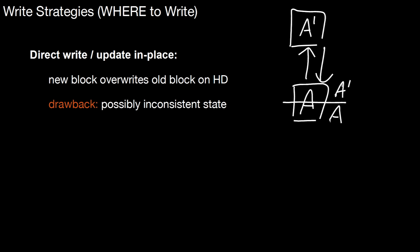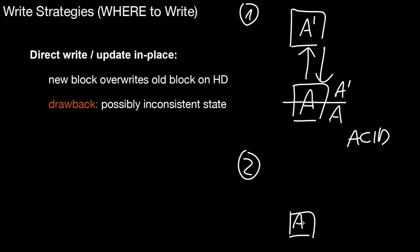That's very problematic for a database system with respect to its ACID properties — here we're violating consistency. The second problem is transactional semantics. If you have transactions and the same situation — you have a block A, you read it into memory, you modify it, and then you write it back — and this overwrite works well, so now you really have A' on disk.